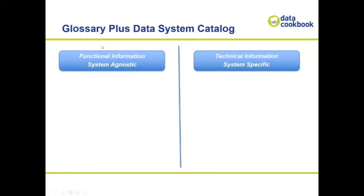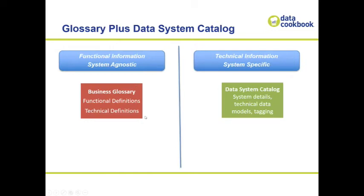The business glossary kind of data request and report process often focuses on functional, system-agnostic information, which is really important. The data catalog stuff that you might hear about focuses on very technical or system-specific information. So here you've got your business glossary with functional and technical definitions, and your data system catalog with system details, technical data models, tagging — essentially the information coming from those data systems overlaid with tags. So bringing these things together creates an enormous amount of value.